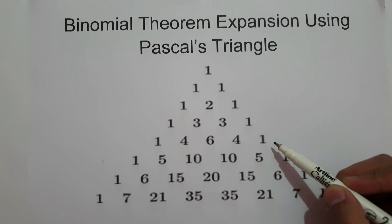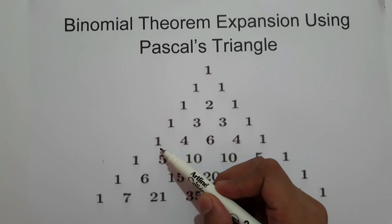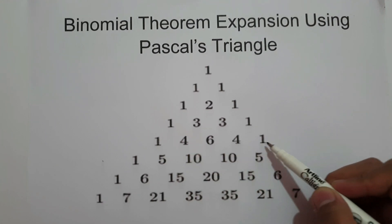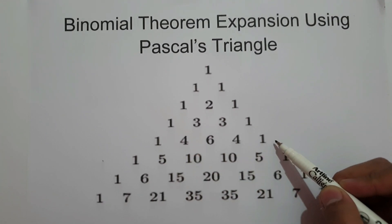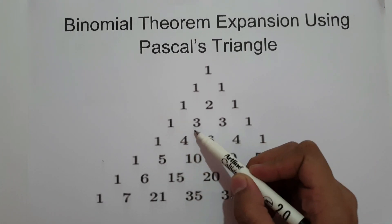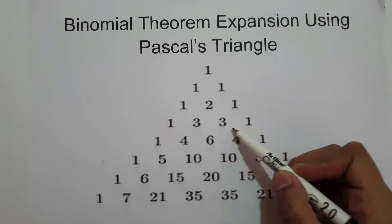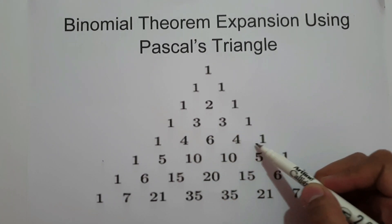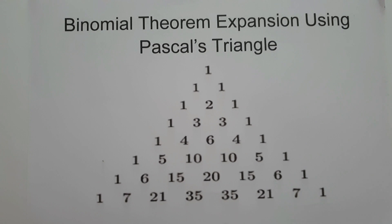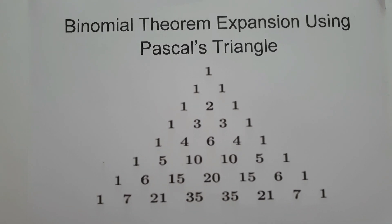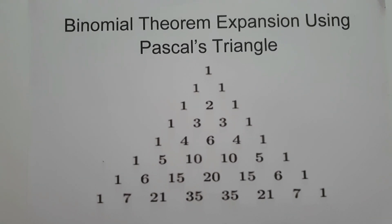The fourth row consists of 1, 4, 6, 4, 1. It's obtained by adding: 1 plus 3 is 4, 3 plus 3 is 6, 3 plus 1 is 4. And so on and so forth. We are going to use this idea in order to expand binomial theorems.